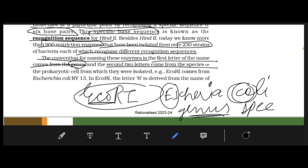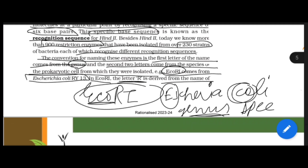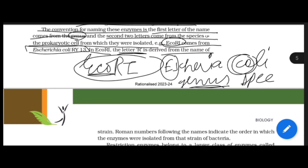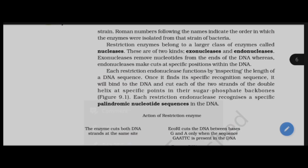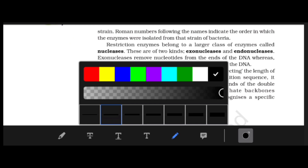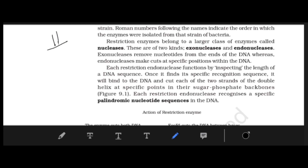The first letter comes from the genus, and the next two letters come from the species. So from E. coli: 'E' from genus, 'CO' from species. After that, the letter indicates the prokaryotic strain from which it was isolated. For EcoRI, the 'R' is derived from the name of the strain — RY13. The Roman numerals indicate the order in which the enzyme was isolated from that particular bacterial strain.